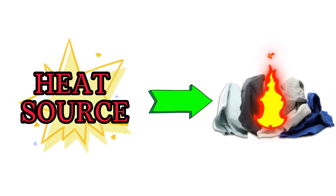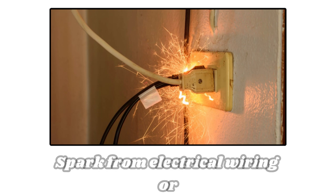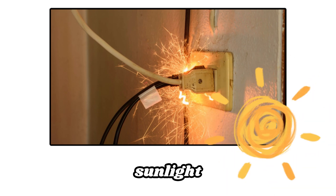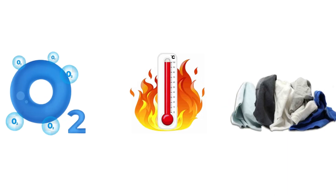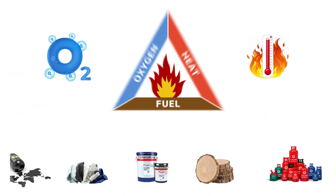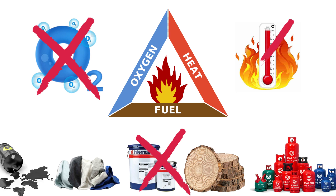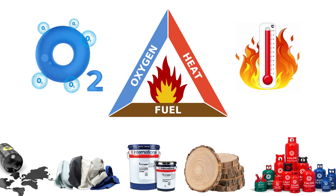A heat source is what ignites the fuel. It can be anything that creates a high enough temperature to ignite the fuel — even a spark from electrical wiring or sunlight. If any one of these components is removed, the fire will cease to exist. Therefore, when extinguishing a fire, it is necessary to either remove one or more components of the fire triangle or disrupt their interaction.